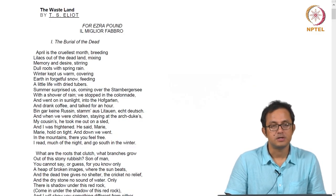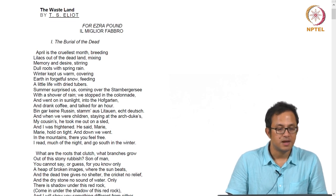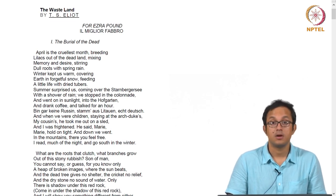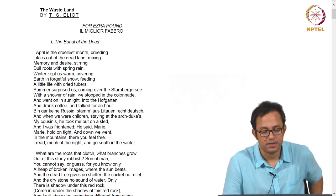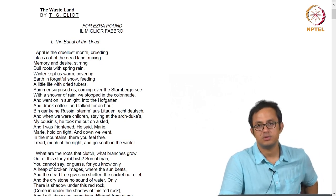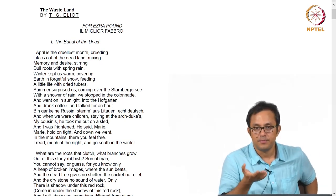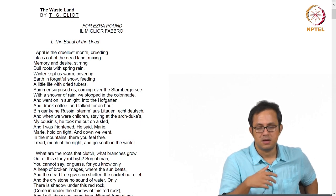Hello and welcome to this NPTEL course entitled Twentieth Century Fiction. In this particular lecture we will begin with T.S. Eliot's poem The Wasteland, which is one of the most canonical texts of high modernism. In my previous lecture I had a summary discussion on Eliot's early poetry and I ended the lecture with a request for you to read the poem Wasteland before this lecture, and I am sure most of you have done it already.